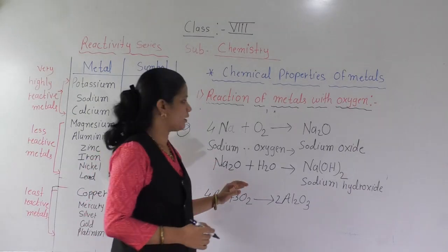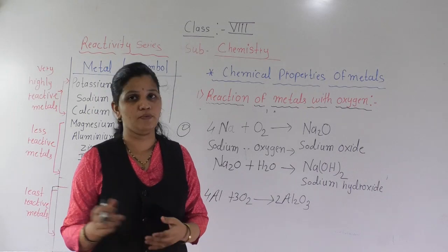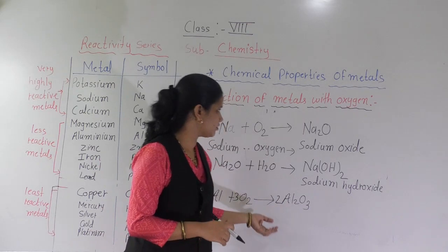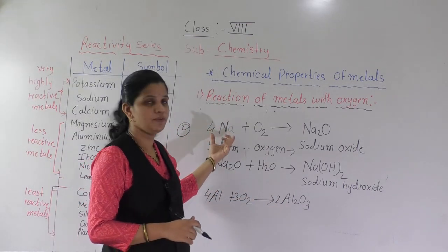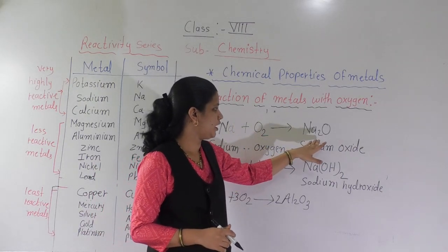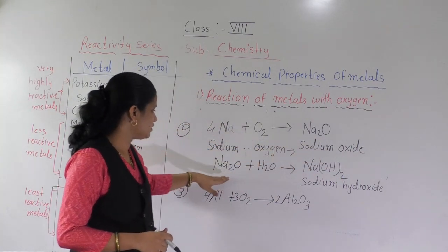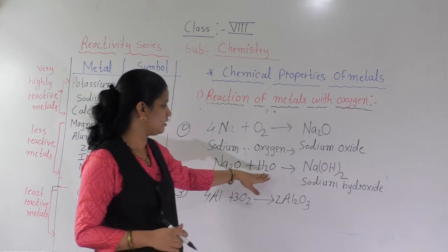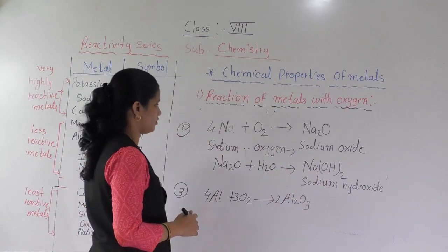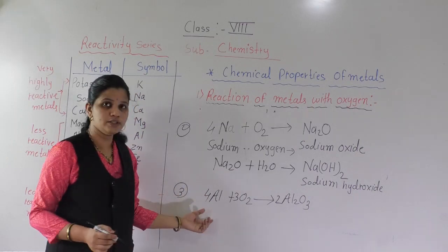We will see more examples of how metals react with oxygen. First example was magnesium: magnesium reacts with oxygen to form magnesium oxide, and magnesium oxide reacts with water to form magnesium hydroxide. Second example — sodium as a metal: sodium reacts with oxygen to form Na2O, that is sodium oxide. And again, sodium oxide reacts with water to form NaOH — sodium hydroxide.